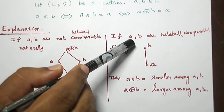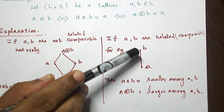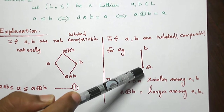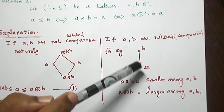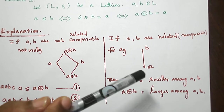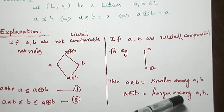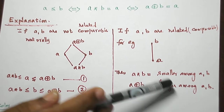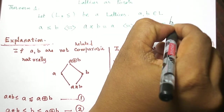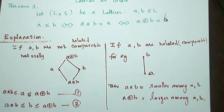Now this result says that suppose the elements are comparable — they are related. For example, A is the smaller element and B is the larger element. Then A∧B is the smaller among the two, which equals A, and A∨B is the larger among the two, which equals B. This is what the theorem states.